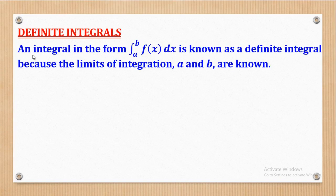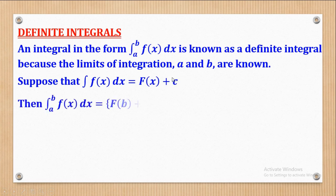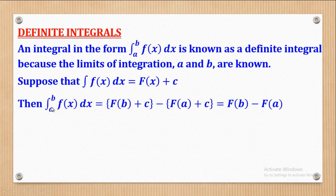A definite integral is an integral with limits. As you can see, these are called limits — this is the lower limit and this is the upper limit. Therefore, if integrating f(x) with respect to x gives capital F(x) plus c, where c is the constant of integration, it implies that integrating f(x) from a to b with respect to x would be equal to capital F(x) after substituting the limits.